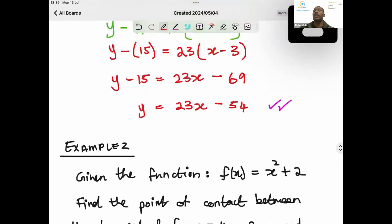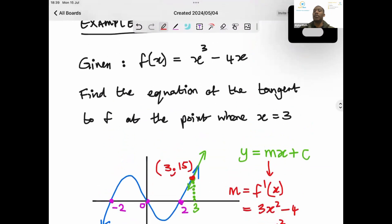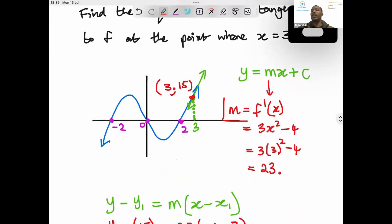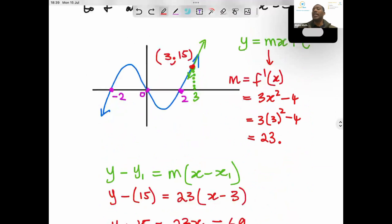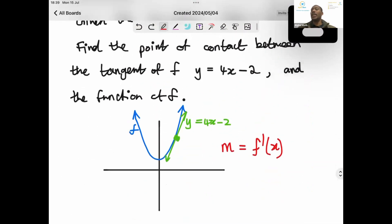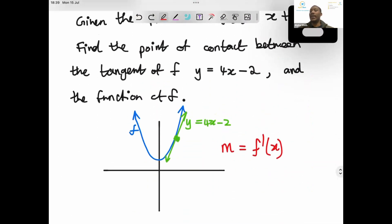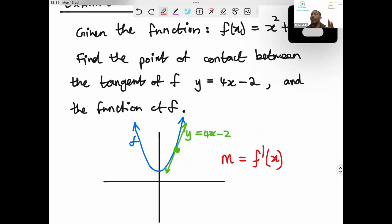Remember we used that formula earlier, yeah, when we were finding the gradient of the tangent. But now we know what the gradient of the tangent is, but we need to find that x value. We need to find the point, okay? So we're still going to use the same formula, and we're just going to solve for x.